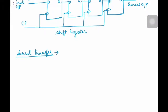In the serial mode of operation, the contents of one register are transferred to another register by shifting one bit at a time. The information is transferred one bit at a time by shifting a bit out from the source register into the destination register. So the serial transfer of information for any register A to B is done with a shift register.